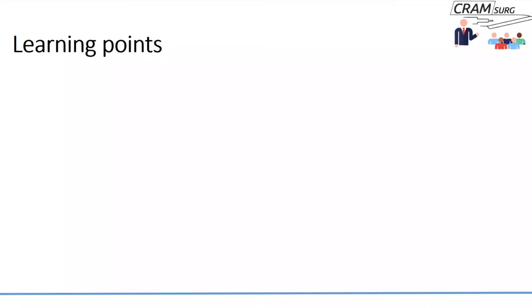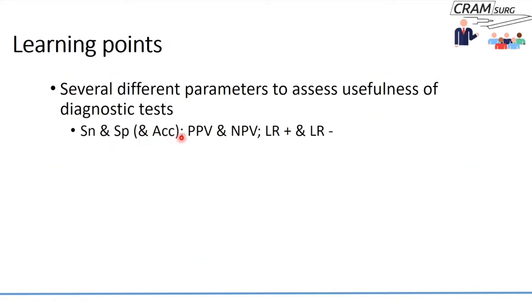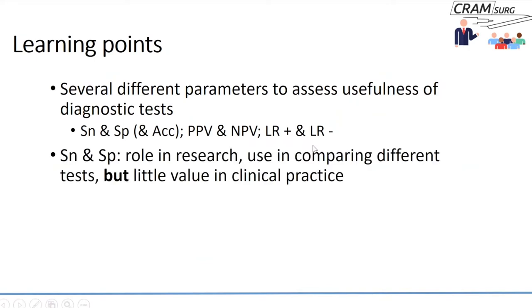We discussed diagnostic tests last time and touched on several parameters used to assess how useful these tests are. We talked about sensitivity and specificity — including accuracy — predictive values, positive and negative predictive values, and likelihood ratios, both for positive and negative tests. We discussed that sensitivity and specificity have an important role in research and can be used in comparing different diagnostic tests.